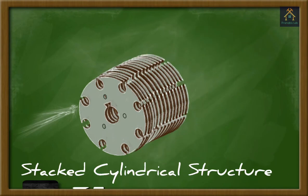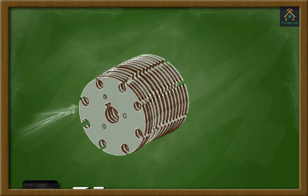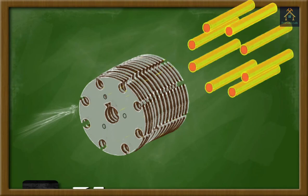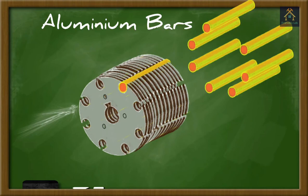After stacking the lamination, eight slots are formed at the curved surface of the cylinder and a hole is formed inside the cylinder according to the axis. Then eight aluminum bars are inserted one after one inside the slots of the cylinder.